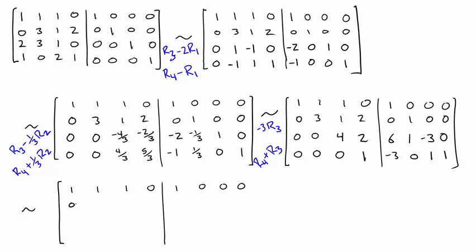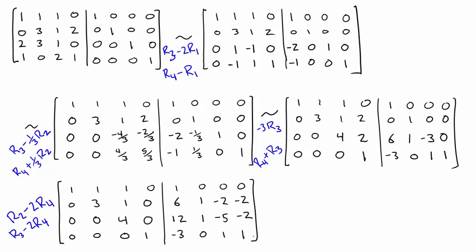So now, let's aim to put some zeros in the fourth column above the bottom entry of 1. If we're putting zeros in a column, we can do a couple of entries at the same time, in the same step. So here we're going to subtract 2 times R4 from each of R2 and R3, and that will put zeros in the 4,2 spot and the 4,3 spot.